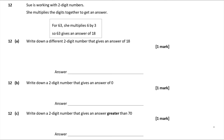Question 12a — Sue multiplies the digits of a two-digit number together. For 63, she gets 6 × 3 = 18. Write down a different two-digit number that gives 18. Factor pairs of 18 are 1 and 18, 2 and 9, and 3 and 6. Since 3 and 6 is already used, I'll use 2 and 9, giving the number 29.